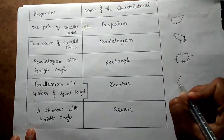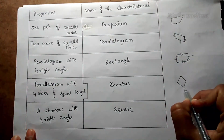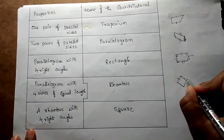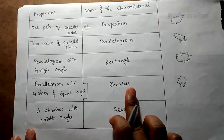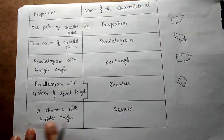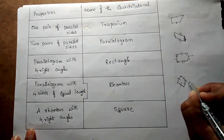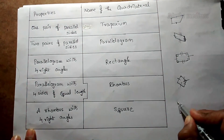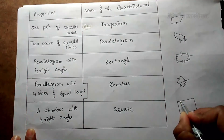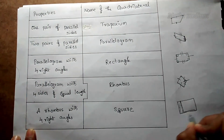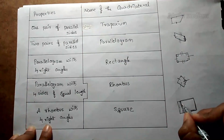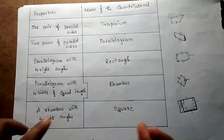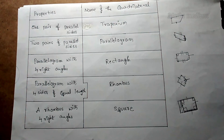Next, coming to the rhombus. The rhombus is diamond-shaped but not exactly a diamond. A rhombus is a parallelogram with all four sides of equal length. Next, coming to the square. A square is a rhombus with four right angles. In a rhombus, we don't have 90 degrees — angles are less than 90. In a square, we have four right angles and all four sides are equal. That completes the properties of quadrilaterals.